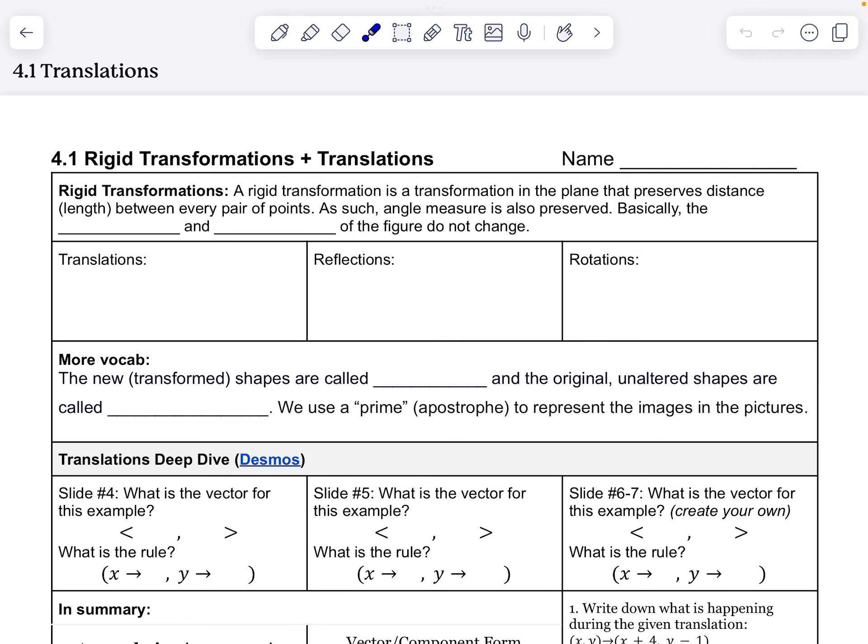Hello my loves, and welcome to chapter four. We're starting with an introduction to transformations. We're talking about rigid transformations first, and then we'll deep dive into translations specifically. A rigid transformation is a transformation on the plane that preserves the distance between every pair of points, and angle measures are also preserved.